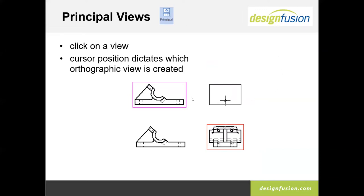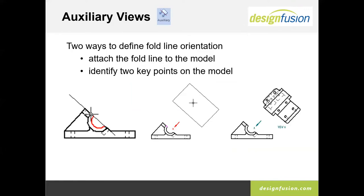You can also launch principal view at any time and drag it out. If this is the front view and you move your cursor to the right, you'll get a right view; to the left, a left view; downward, a bottom or top view. It'll generate those views just by moving your mouse using the principal view command. With the auxiliary view, you define your fold line — you can pick an edge and drag off, or pick two points and drag off — and the view comes off normal to your fold line.